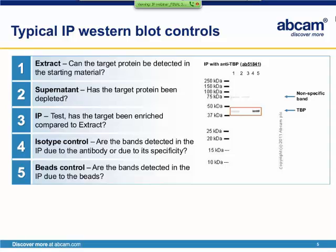The fourth lane is a sample where the immunoprecipitation has been performed with an isotype control antibody — an antibody of the same isotype as the one used in IP but not recognizing the target protein. This control is important as it will tell you whether the bands you see in IP are due to the antibody's specificity for the target. The last lane is the bead control where everything but the antibody was added to the reaction, telling you if there are bands due to nonspecific binding of proteins to the bead.